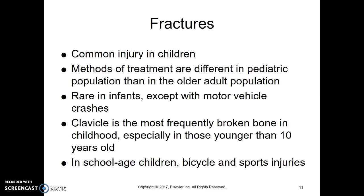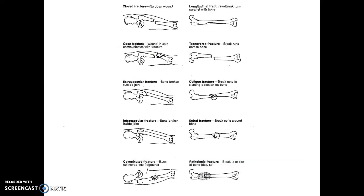In school-age kids, we see injuries from bicycles and from sports. This is not from our current textbook, but ours just lists the words, and I thought it was nice to have pictures. A closed fracture means we have a fracture inside the tissue — nothing is sticking out. An open fracture, also sometimes called compound, means you have a bone sticking out. So now we not only have the issue of the fracture, we also have the issue of infection.